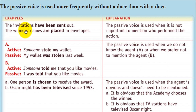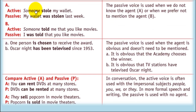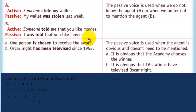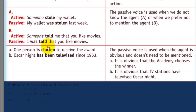It's not necessary to know who sent the invitations. Active: 'Someone stole my wallet.' Passive: 'My wallet was stolen last week.' The passive voice is used when we don't know the agent. We said 'someone stole' in the active; in the passive, 'was stolen.' Also: Active: 'Someone told me that you like movies.' Passive: 'I was told that you like movies' — or when we prefer not to mention the agent.